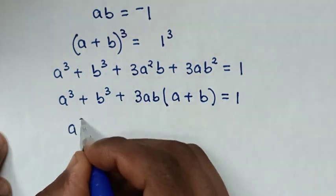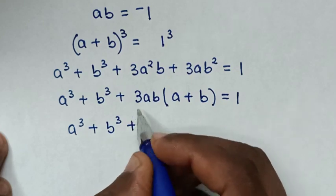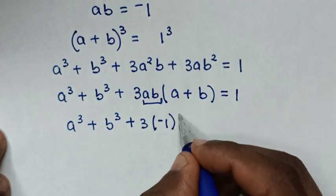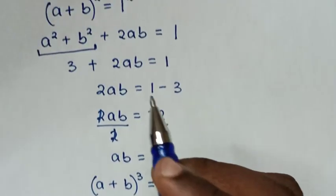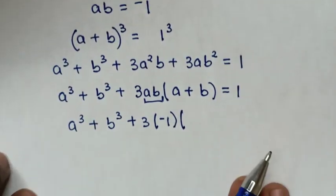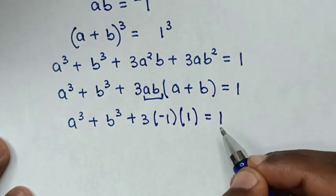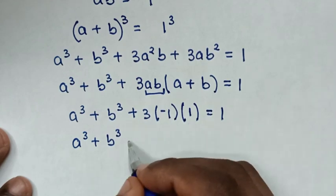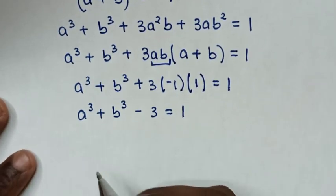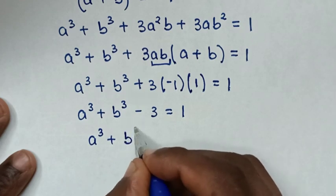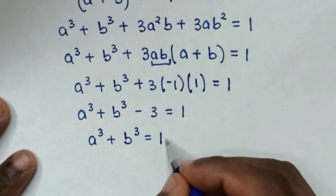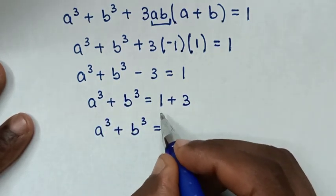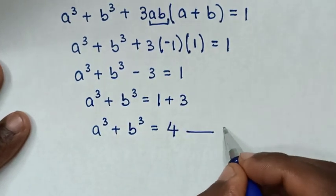In the next step, we have a cubed plus b cubed plus 3ab times bracket a plus b bracket equals 1. From our earlier result, ab equals negative 1, so it becomes times negative 1. And a plus b from equation 1 equals 1, so substituting: a cubed plus b cubed plus 3 times negative 1 times 1 equals 1, giving a cubed plus b cubed minus 3 equals 1, therefore a cubed plus b cubed equals 4. We label this equation 3.